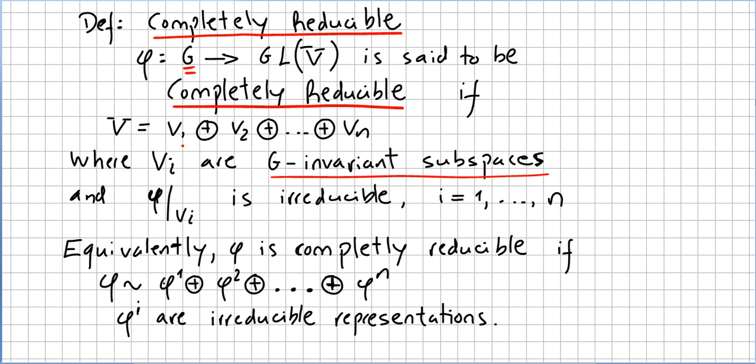Do not forget that all these Vs, they have to be G invariant subspaces. Equivalently, phi is completely reducible if phi is equivalent to the direct sum of phi1, phi2, ... phiN, where phi of I are irreducible representations.